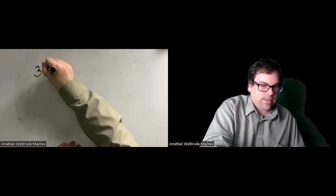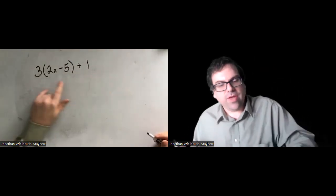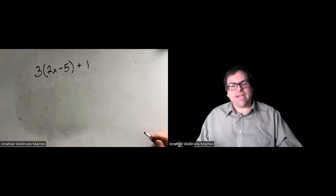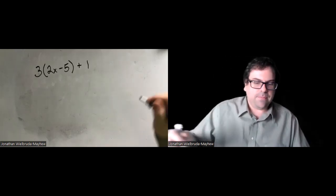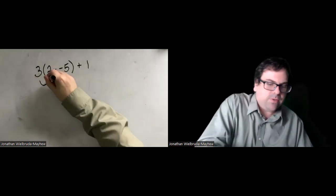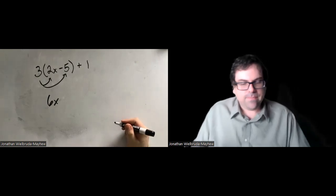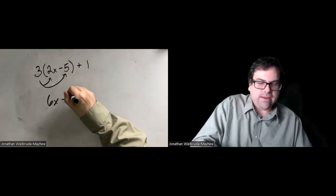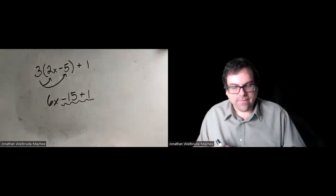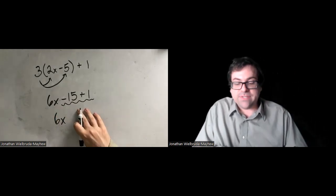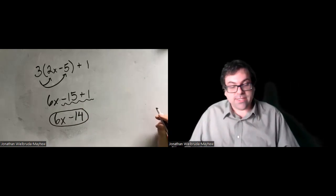Give this one a try — we distribute the 3 through the parentheses and only through the parentheses. 3 times 2x is 6x, and positive 3 times negative 5 is negative 15. Then we have plus 1. We can combine the constant like terms: negative 15 plus 1 is negative 14. So 6x minus 14 once all is simplified.